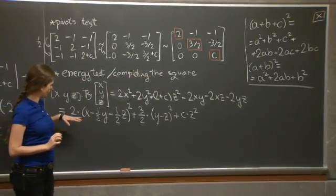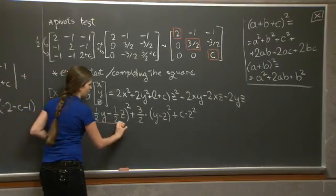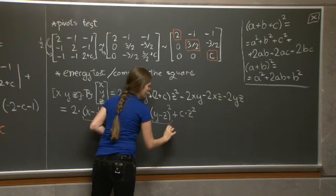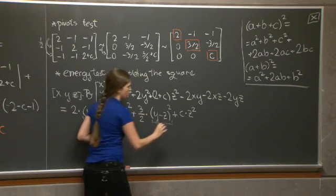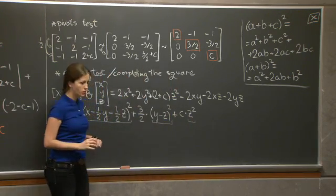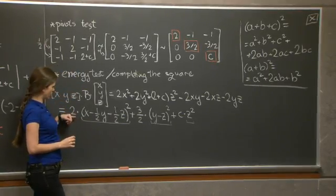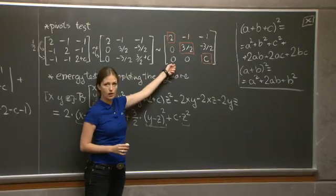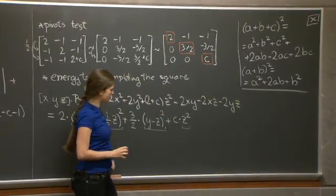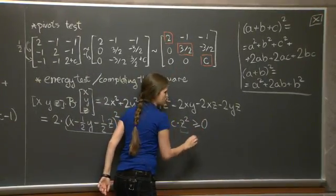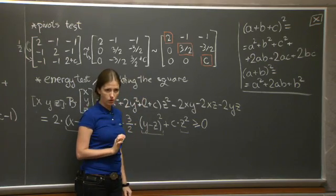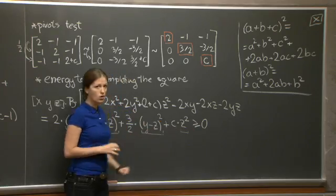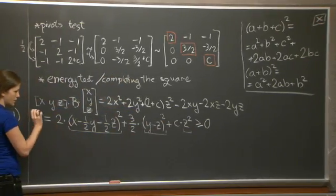Now let's look at this. Each term is a square of some real number, so each is non-negative. They're all multiplied by positive numbers 2, 3/2, and c — which we've already seen in the other tests. So if c is greater than or equal to 0, this whole expression is certainly always greater than or equal to 0.